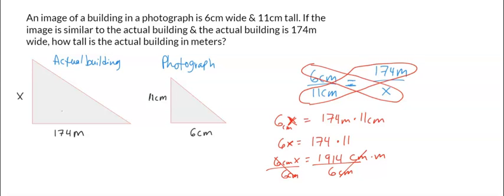Which will leave us with 1914 divided by 6 equals X. So bringing the answer here, X is equal to 319 meters. That's the unit that we're left with.